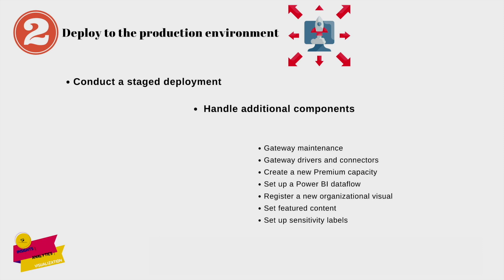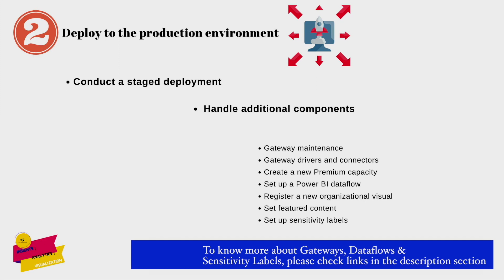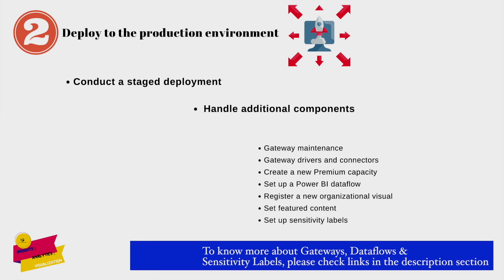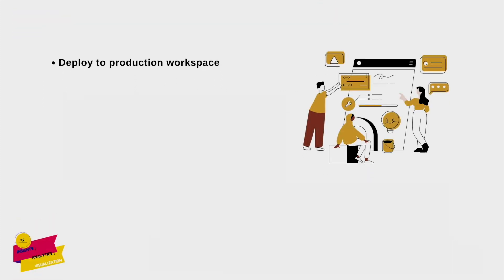In the staging environment, you can also create a new premium capacity, set up dataflows or data marts, register a new organizational visual, set up featured content, and apply sensitivity labels for privacy if applicable to your organization. The next part is deploying to the production workspace, where you deploy all the contents from the testing workspace to the production workspace.